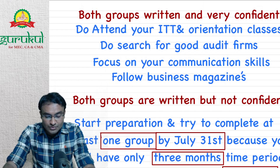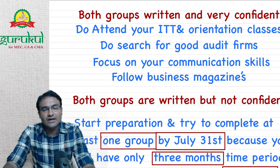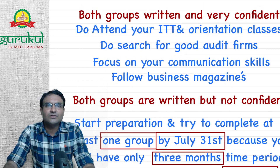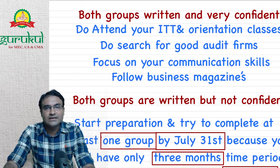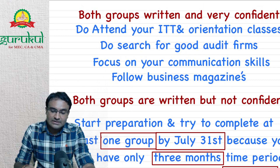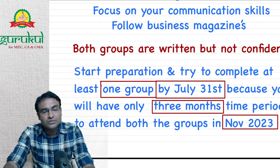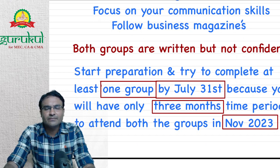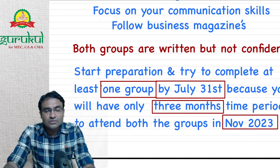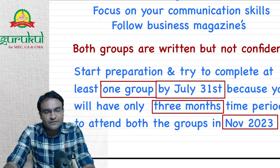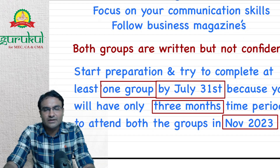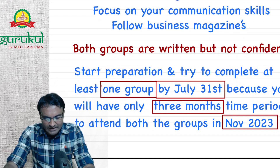So a student who has given both groups and is very confident can do all these things. But for students who have given both groups and have some doubt — maybe even one percent — they should start preparation and try to complete at least one group by July 31st.